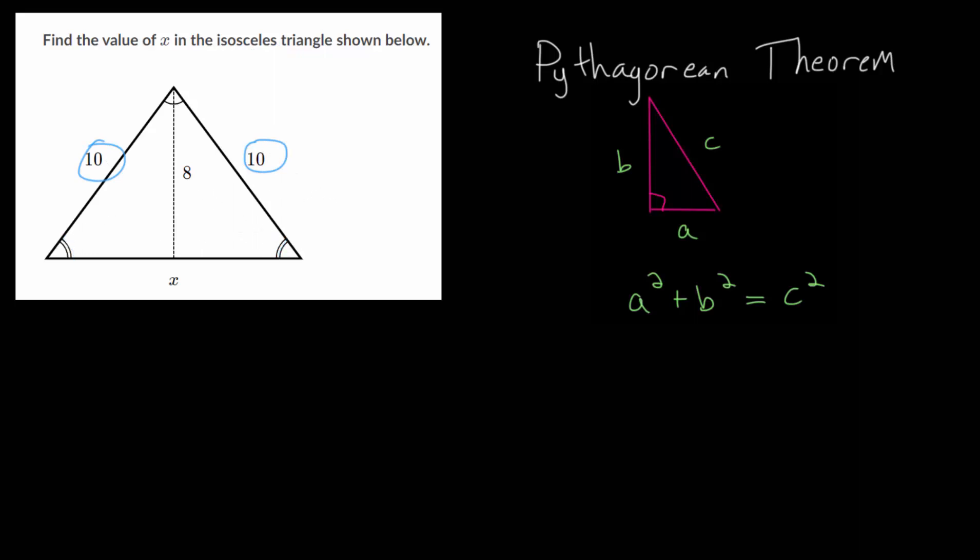We can use this information to figure out the missing side length x. The main idea with these triangles is that this vertical line here is going to split them in half so that we essentially get two congruent right triangles.